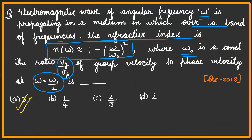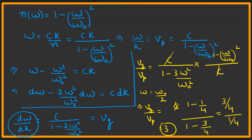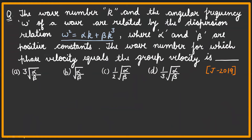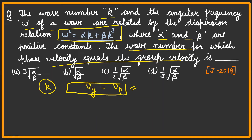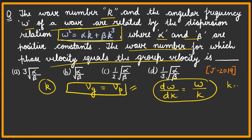Coming to the third question: the wave number k and angular frequency ω of a wave are related by the dispersion relation, where α and β are positive constants. We need to find the wave number k for which phase velocity equals group velocity — that is, when vg = dω/dk equals vp = ω/k.